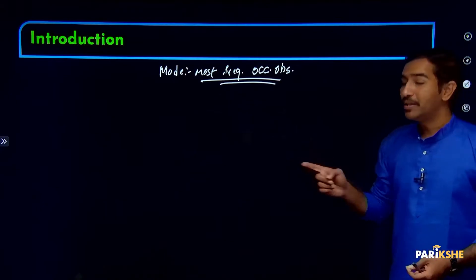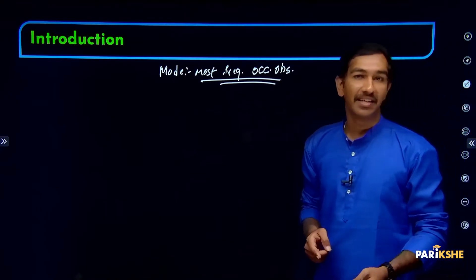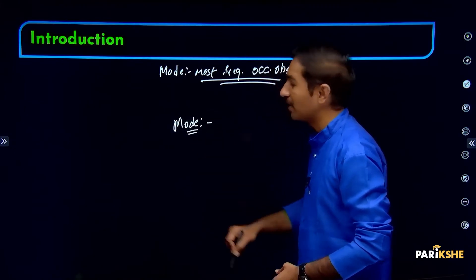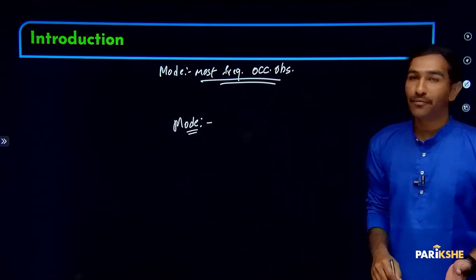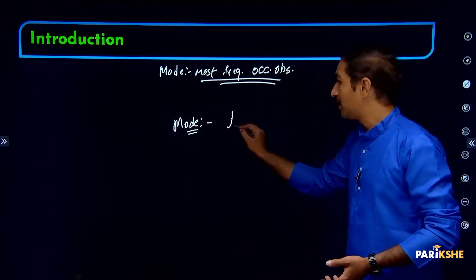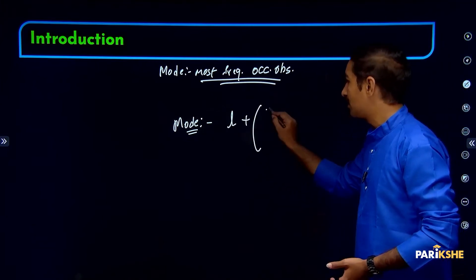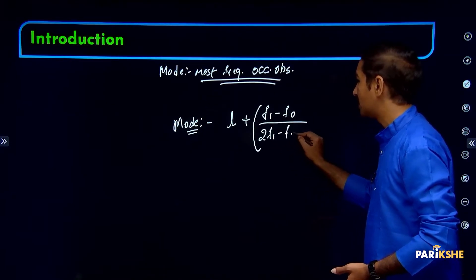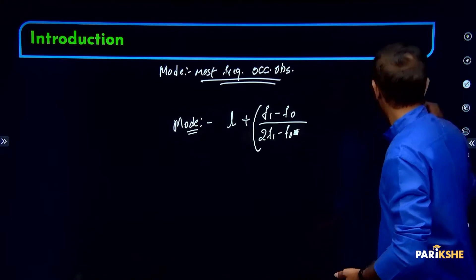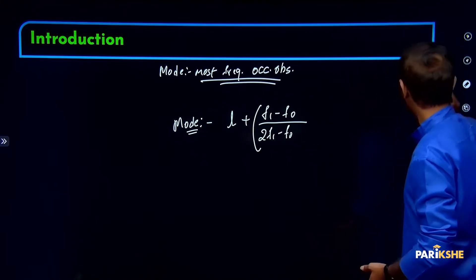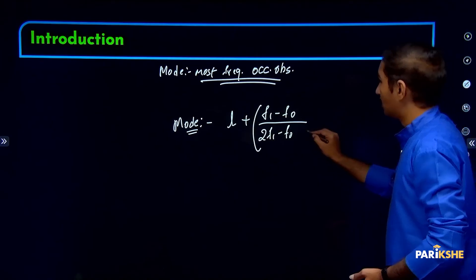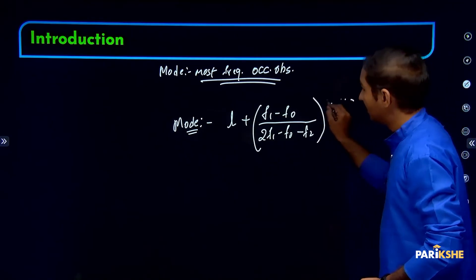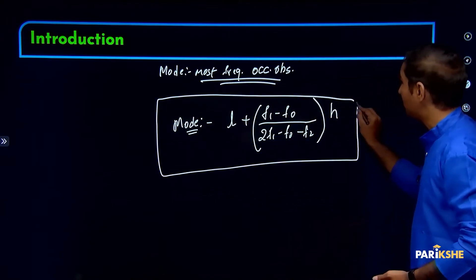Now when data is in grouped form, the formula for mode of grouped data is: Mode = L plus (F1 minus F0) divided by (2F1 minus F0 minus F2) into H. This is the formula to find out mode.